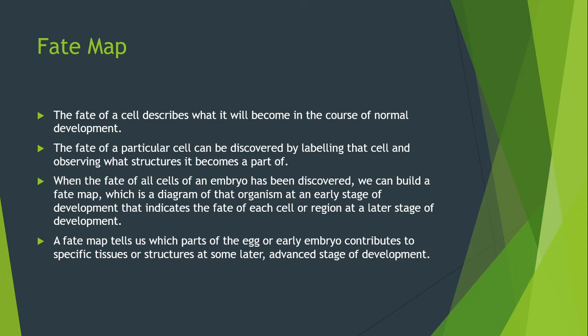Fate map. What is a fate map? The fate of a cell describes what it will become in the course of normal development. The fate of a particular cell can be discovered by labeling that cell and observing what structure it becomes a part of.